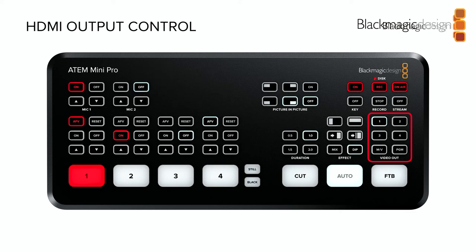The ATEM Mini Extremes have two HDMI outputs, so you can have multi-view on one and program or direct output on the other. The streaming status is also visible on the multi-view. You can switch between monitoring program and multi-view directly from the panel. Today as I'm talking, I'm looking at my program output and switching between that and multi-view, so I can see everything at once.